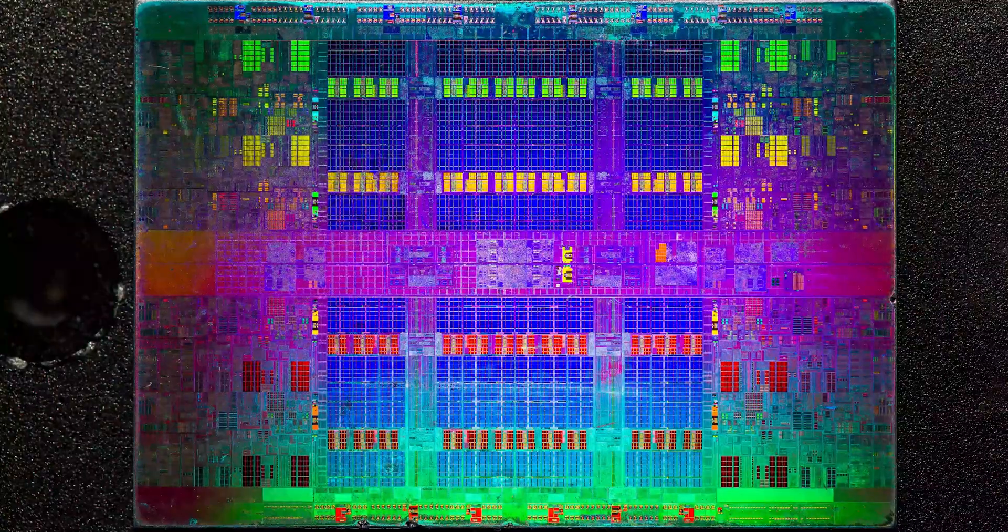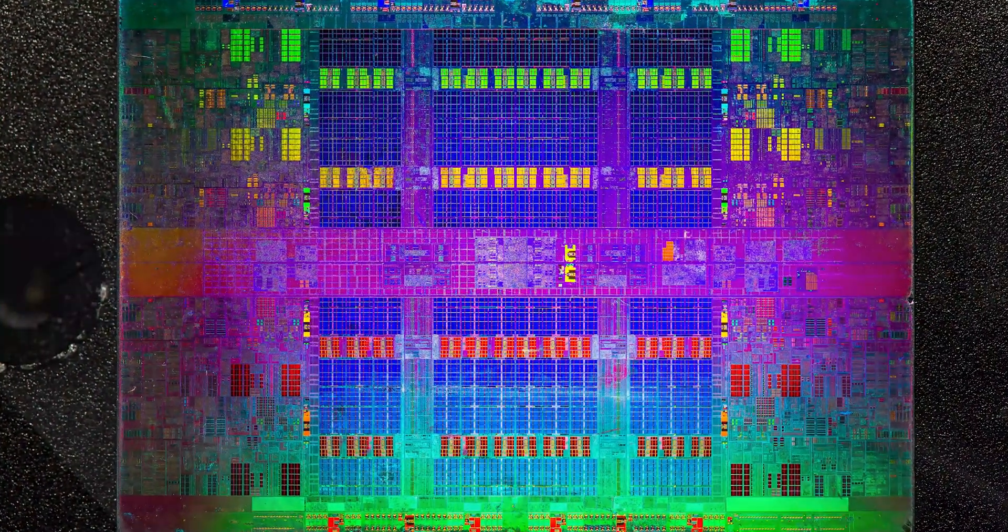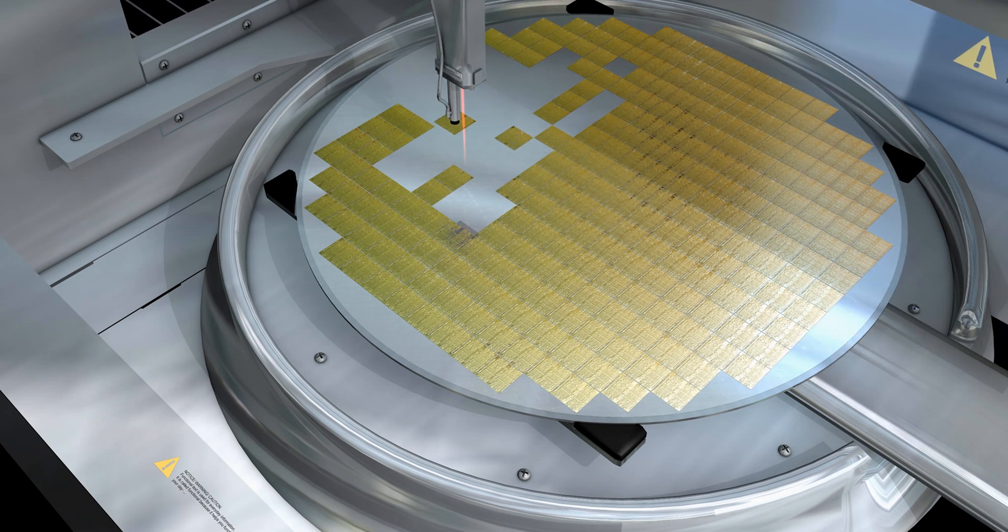Then you have another process where you polish the wafers and you want to make sure they're polished to the correct thickness and they're not wedge shaped or warped. The next step is typically lithography and you want to make sure that the depth of focus of the lithography equipment can handle the wafers.